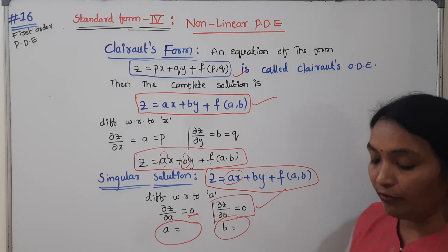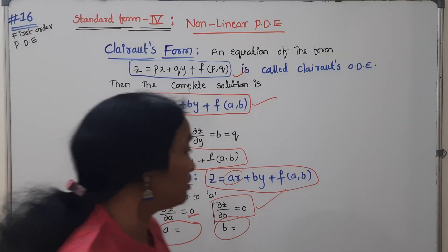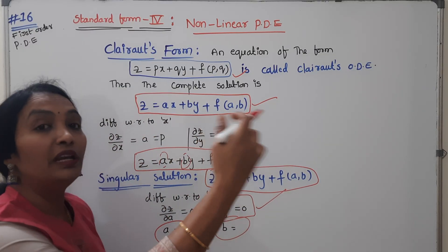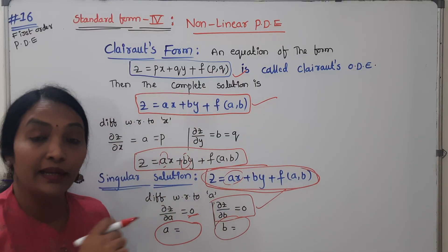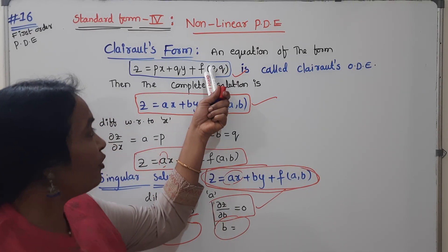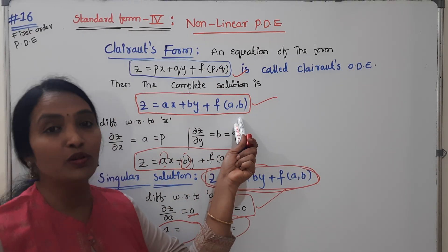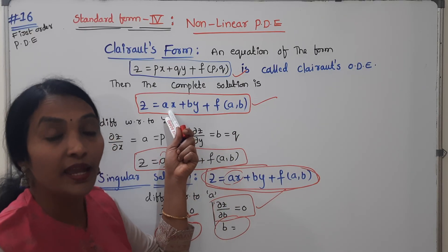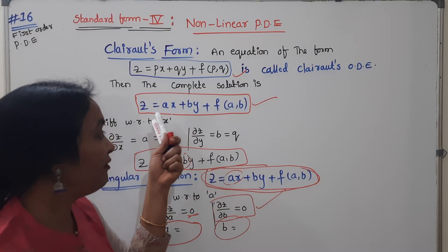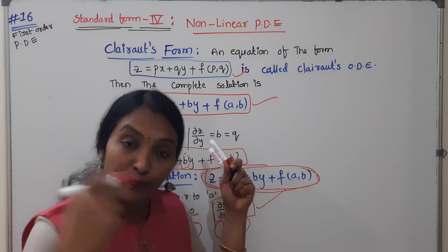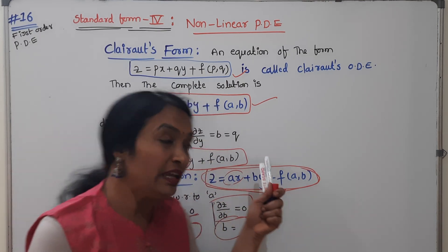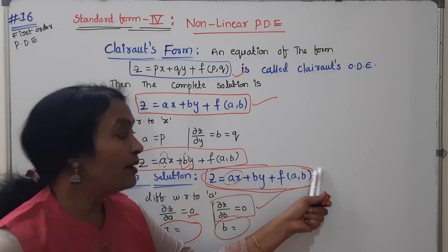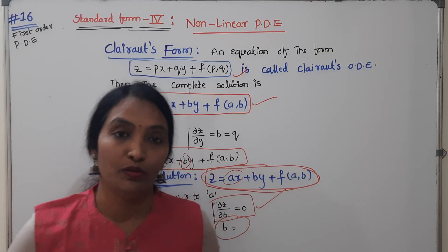What is the general solution for the equation? Put that A value and B value here, you will get the general solution. In Clairaut's equation format, there will be a complete solution. Differentiate with respect to A, you get general solution equals zero. Differentiate with respect to B, you get general solution equals zero. Put those values, then we have complete solution to the final solution.